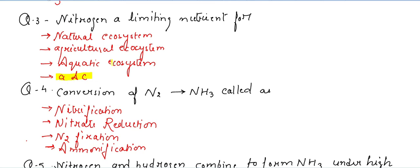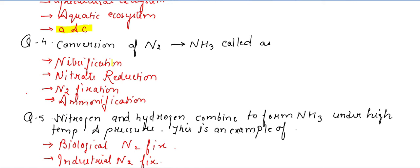The next question: what is the conversion of N2 into NH3 called? The options are nitrification, nitrate reduction, nitrogen fixation, and ammonification. The process of converting atmospheric free nitrogen gas into nitrogenous compounds like NH3 is called nitrogen fixation.